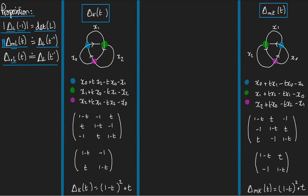I'm going to show you how to prove the second one. The way I've decided to do it is by showing you on the left, in this big box on the left, the computation of the Alexander polynomial of a knot k. This is the knot — it's the trefoil, oriented in this way. I've labelled the arcs x0, x1, x2 and the crossings blue, green, and pink. I've written out the polynomial colouring equations, put the coefficients into a matrix, deleted the first row and column to get a reduced matrix, and then taken its determinant to get that the Alexander polynomial of the knot k is 1 minus t squared plus t. I haven't simplified that for the purposes of demonstration.